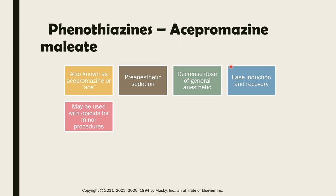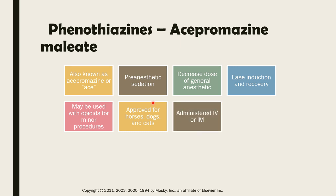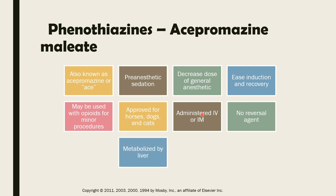Acepromazine may also be used with opioids for minor procedures, such as the repair of a skin laceration. Opioids provide the analgesic property, since phenothiazines have no analgesic effect. It is approved for use in horses, dogs, and cats, and is administered IV or IM. An important property is that phenothiazines have no reversal agent, so care must be taken for animals with heart disease, hypotension, or liver disease, as the drug is mainly metabolized by the liver. This drug will also slowly cross the placenta.